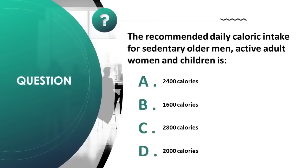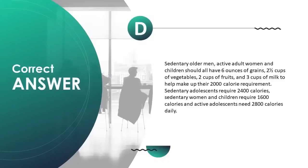The recommended daily caloric intake for sedentary older men, active adult women, and children is: A) 2400 calories, B) 1600 calories, C) 2800 calories, D) 2000 calories. Correct answer is D. Sedentary older men, active adult women, and children should all have 2000 calories daily.